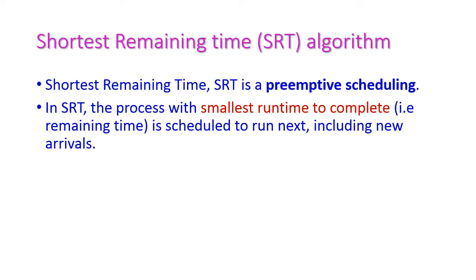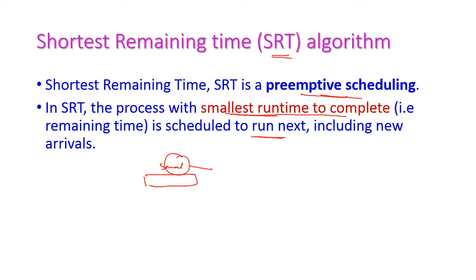Next is Shortest Remaining Time algorithm, that is SRT algorithm. This is a preemptive scheduling algorithm. The process with the smallest remaining runtime to complete will be selected to run next. If a process's remaining time is very small, then that particular process will be selected for CPU execution.